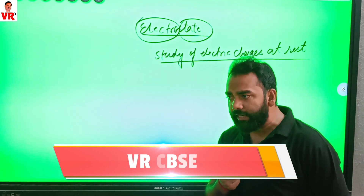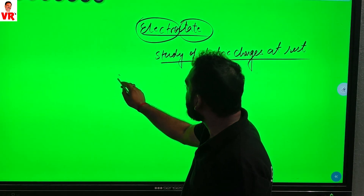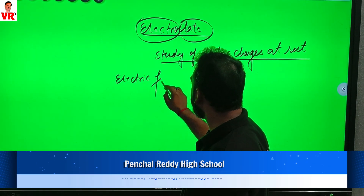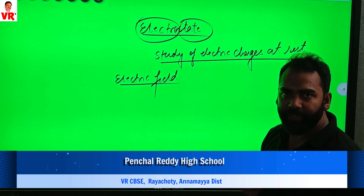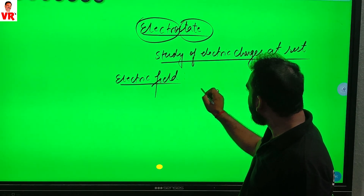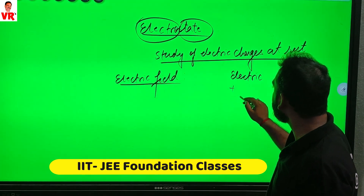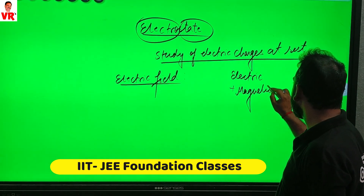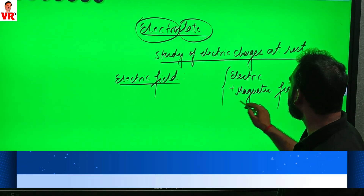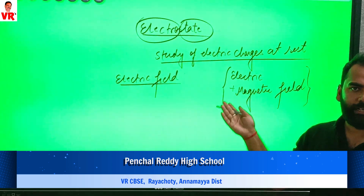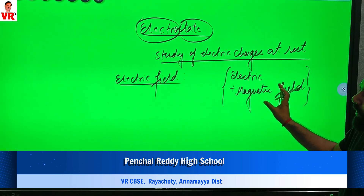Whenever an electric charge is at the rest position, it will create only an electric field. The charge in the state of rest will create an electric field, whereas the charge in the state of motion will create both an electric as well as a magnetic field.